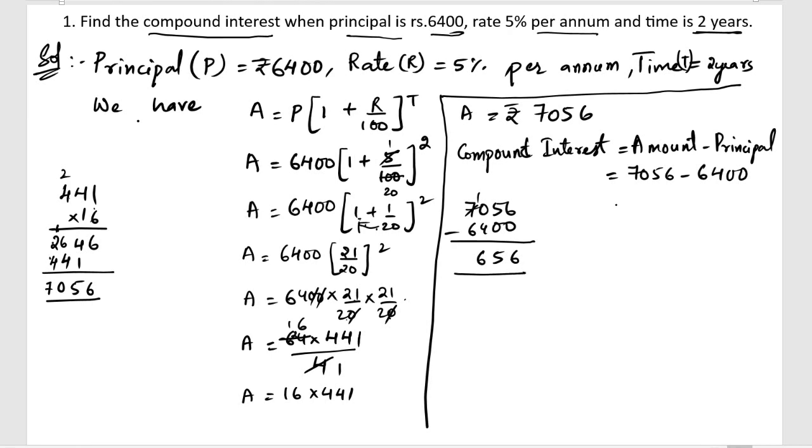so 656. So, we got compound interest as 656.